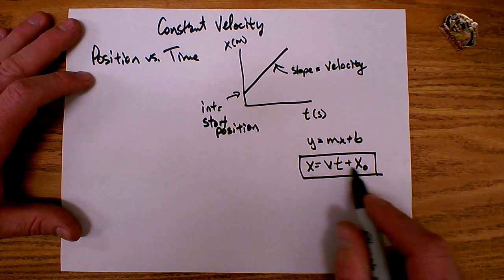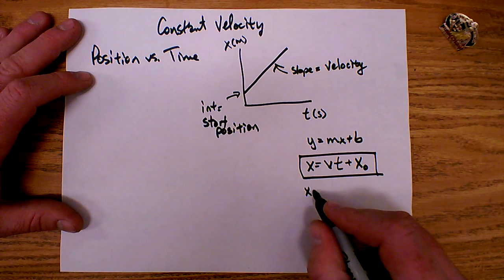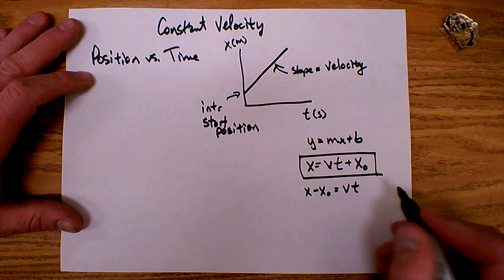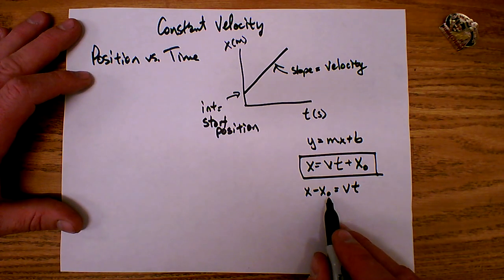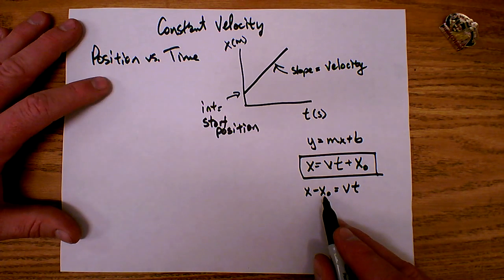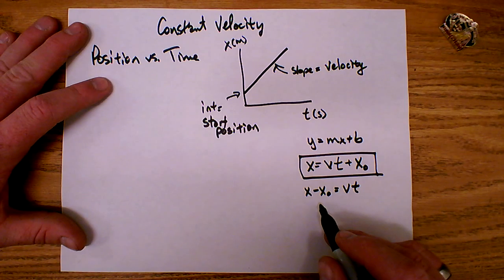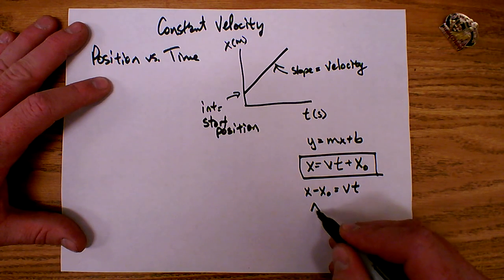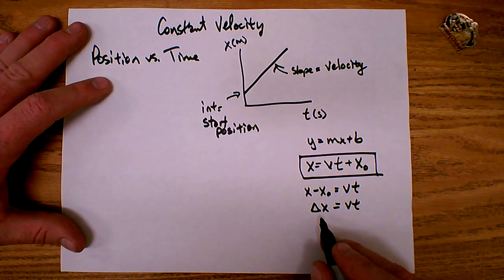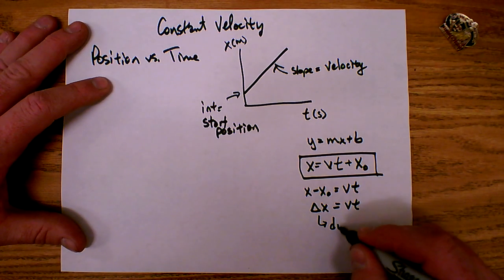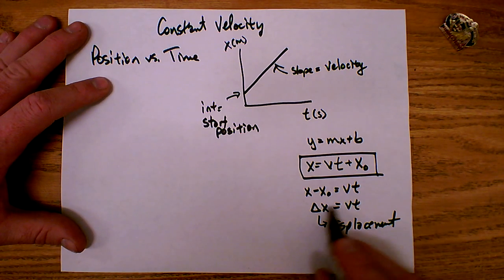A couple of things we can learn here. If I take this equation and subtract the initial position from both sides, I end up with x minus x-initial equals v times t. This x is the final position, x-initial is the initial position, and whenever I have a final something minus an initial something, we call that a change. So this is a change of x, or a change of position — delta x — which is what we call displacement. So displacement is equal to velocity times time.